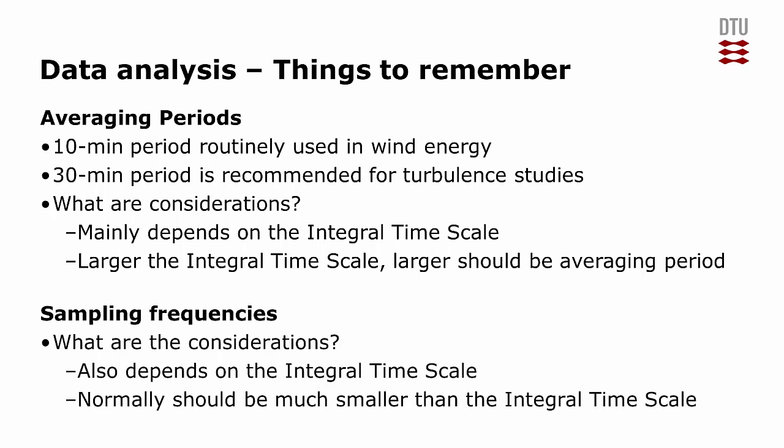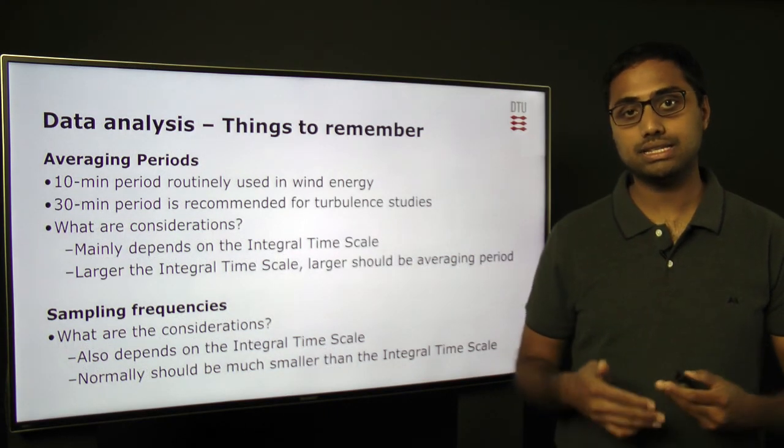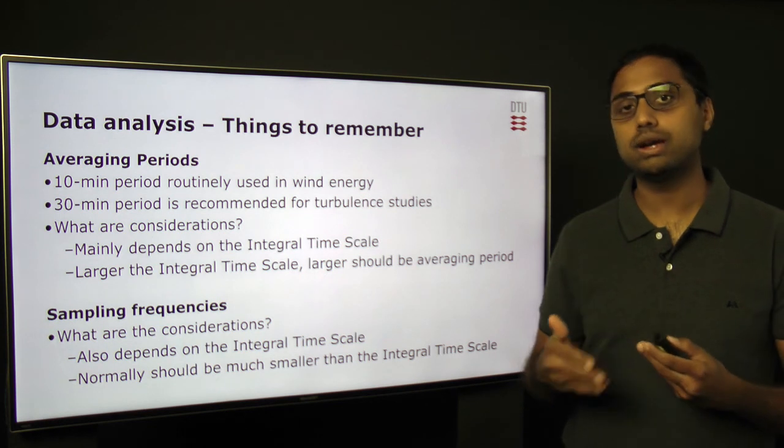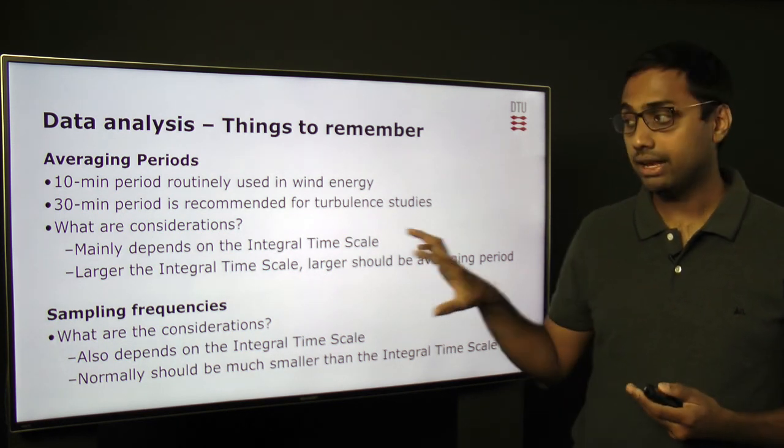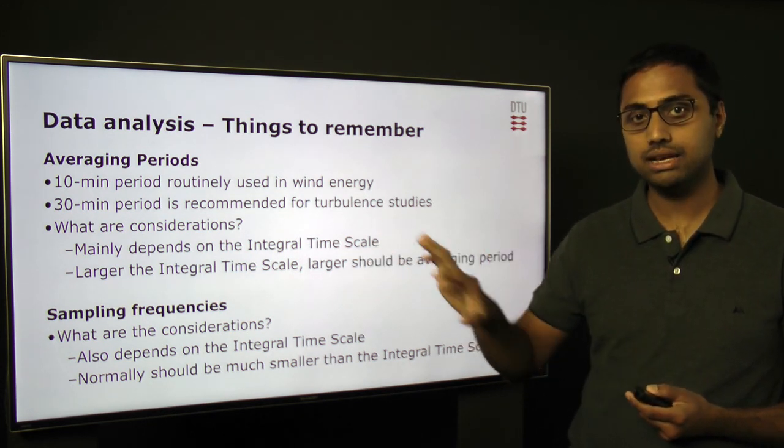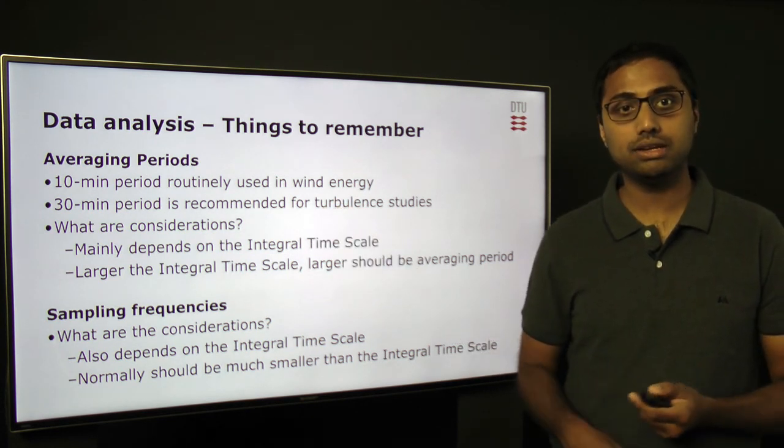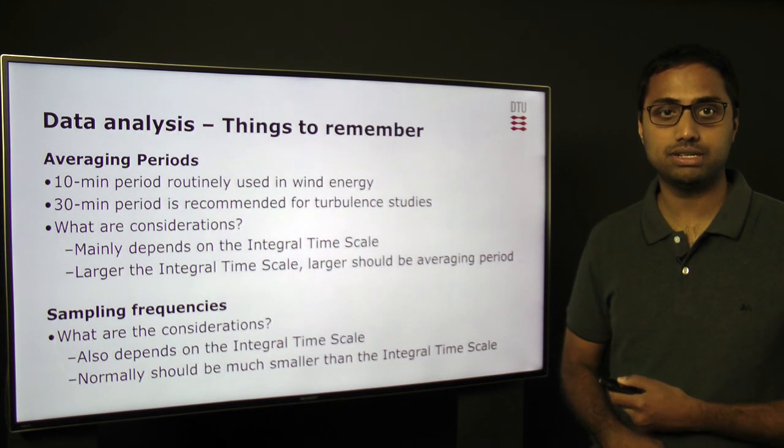Coming to sampling frequencies, what are the considerations? It also depends on the integral time scale. Normally the sampling frequency should be much smaller than the integral time scale, otherwise the random errors in the estimated turbulence statistics is quite large, which normally we don't like. Now you can see a connection between the concepts that were introduced previously and the concepts used in routine data analysis, why these concepts are important to understand.